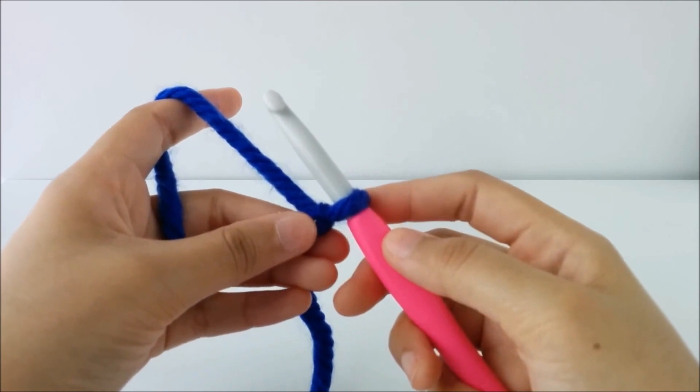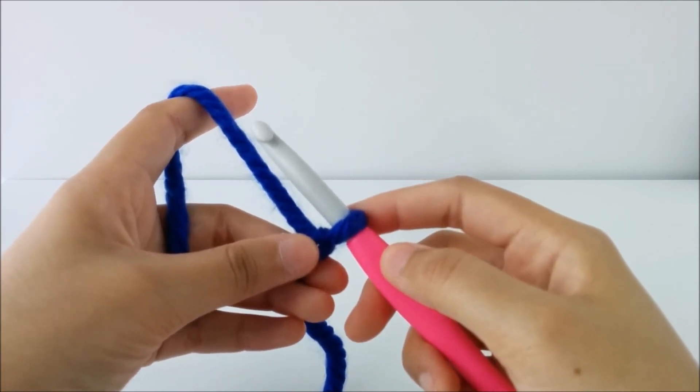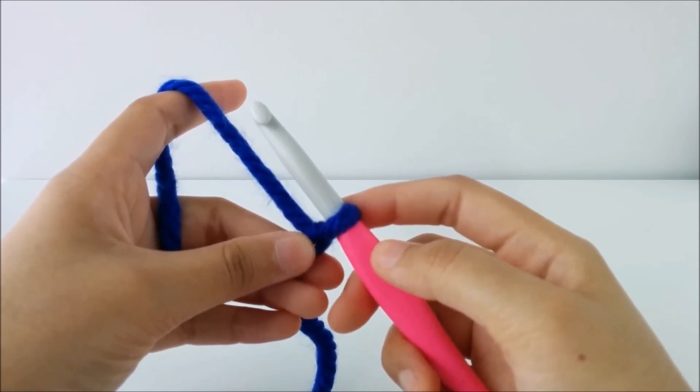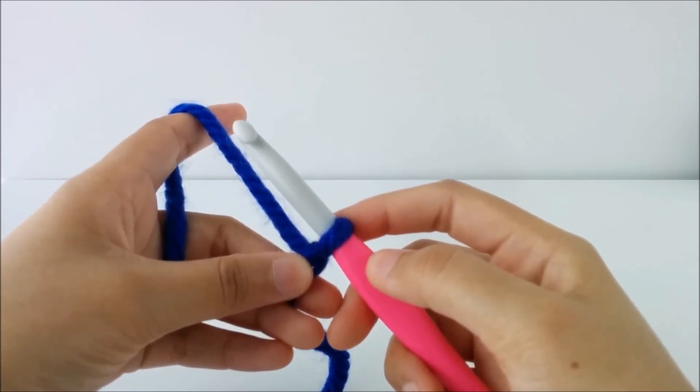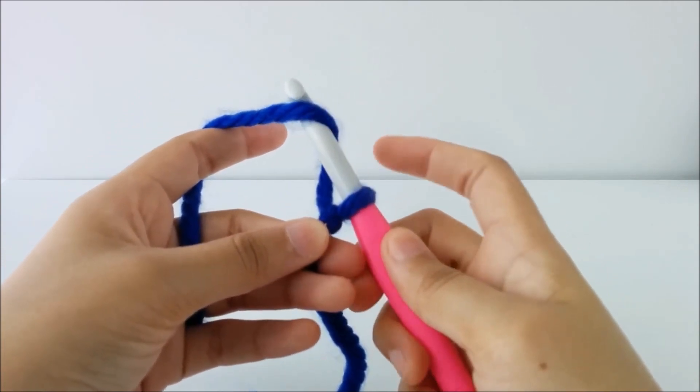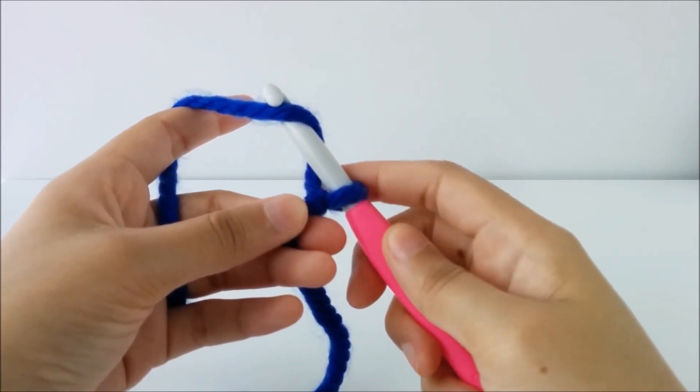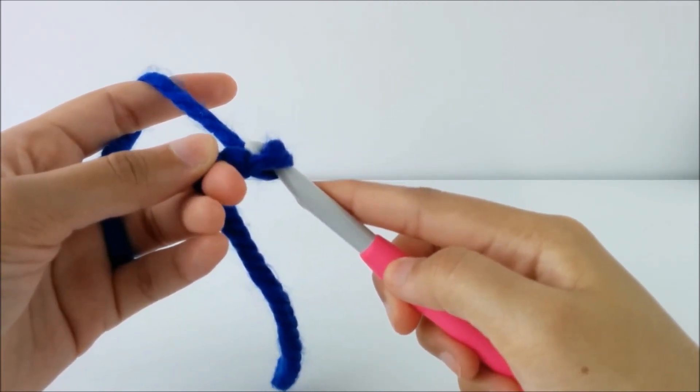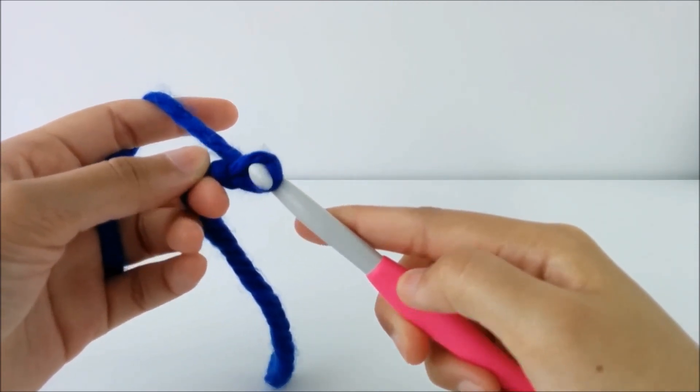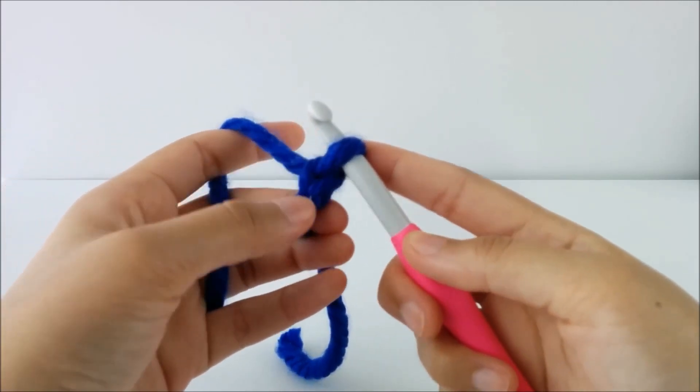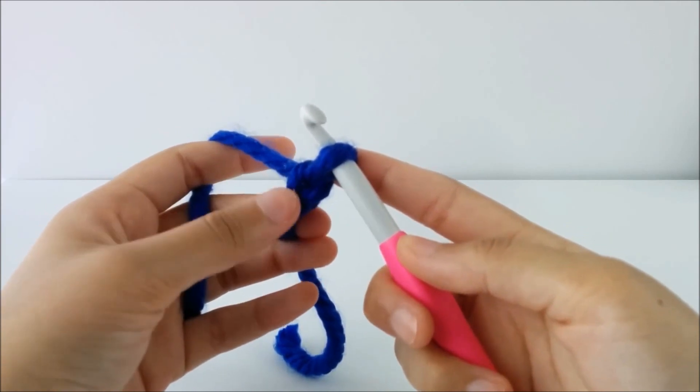So to start our first chain, I'm going to hold your hook and your yarn like this. Bring your yarn over the hook so it's wrapped around the top of it. And then bring your hook down through the loop, bringing that yarn with you. And it's going to create this v-shaped link. And that is your first chain.